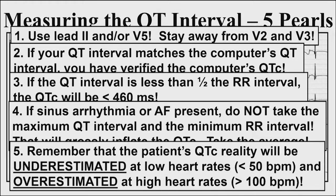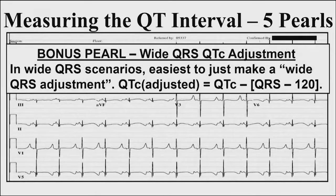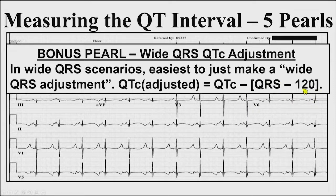A patient's QTc reality breaks down at low and fast heart rates. In bradycardia, you'll underestimate their QTc. At high heart rates, you'll overestimate. Bonus pearl: if you have to do a wide QRS adjustment, the patient for sure doesn't have congenital long QT syndrome, but this applies when assessing QT prolonging drug effects in a patient with a wide QRS. Simple adjustment: subtract 120 — quite sensitive. Some subtract 100 to be more specific and avoid overcorrections.